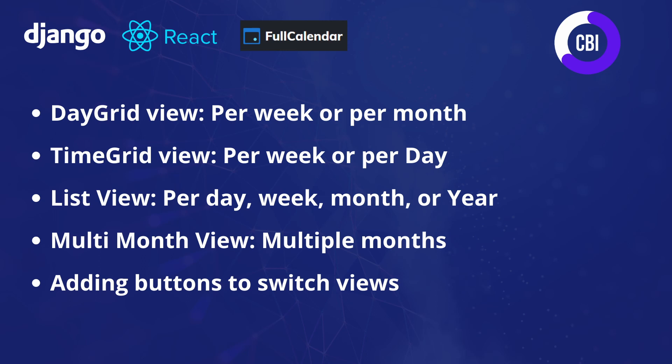Then we're going to look at all the other different views that are available — a time grid view, so you can see your calendar with the hours on the left-hand side; a list view which shows all of your appointments in a list; the multi-month view; and finally I'll show you how to create your own custom view so you can take any of the views and alter them for your exact specification.